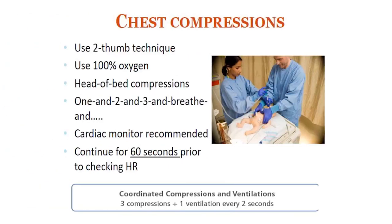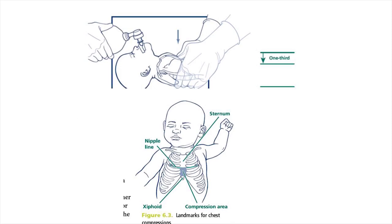For chest compression, use a 2-thumb technique, ideally positioning yourself at the head end of the baby. Use 100% oxygen. The sequence is: 1 and 2 and 3 and breathe, 1 and 2 and 3 and breathe, etc. A cardiac monitor is recommended. Give chest compression for at least 60 seconds prior to rechecking heart rate. Coordinated compressions and ventilations are 3 compressions plus 1 ventilation every 2 seconds, totaling 120 cycles per minute. The compression point is midway between the xiphoid process and a line connecting both nipples, to a depth of one-third the anteroposterior diameter of the chest.